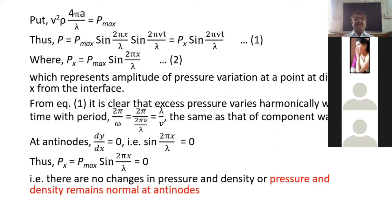Here p_max · sin(2πx/λ) is the position-dependent part, which we denote as p_x. So the excess pressure is p = p_x · sin(2πvt/λ), where p_x = p_max · sin(2πx/λ) is the amplitude of pressure variation at any point x from the open end of the pipe.